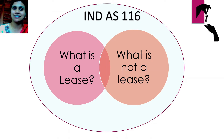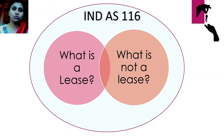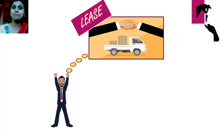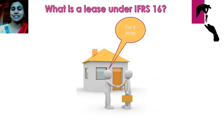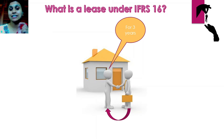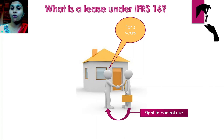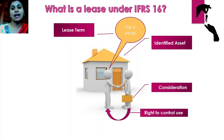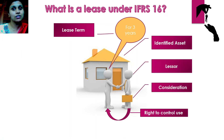First, let us understand what is a lease. A lease is a very simple rental agreement — an agreement to use an asset that you do not own. So if a company does not own an asset, it can simply take it on a lease. But the definition under IFRS 16 is slightly complicated. What you see here are the landlord and tenant agreeing to rent the house for a period of three years. A lease is a contract that conveys the right to control use of an identified asset for a specified period of time in return for a consideration. The person giving the right to control use is known as the lessor and the person receiving the right is known as a lessee.